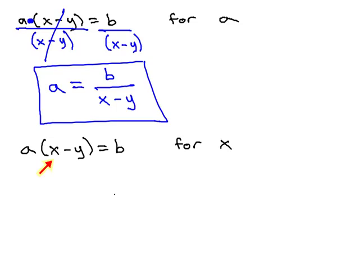So now, we can start solving it using some of the methods we've seen before, which includes, this time, a benefit of distributing the a through the parentheses. This gives us ax minus ay equals b.